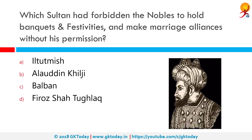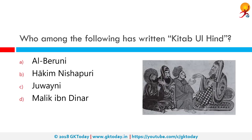Which Sultan had forbidden the nobles to hold banquets and festivities and make marriage alliances without his permission? The correct answer is Alauddin Khilji.